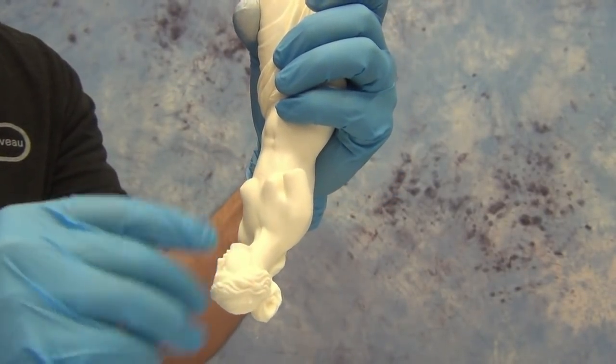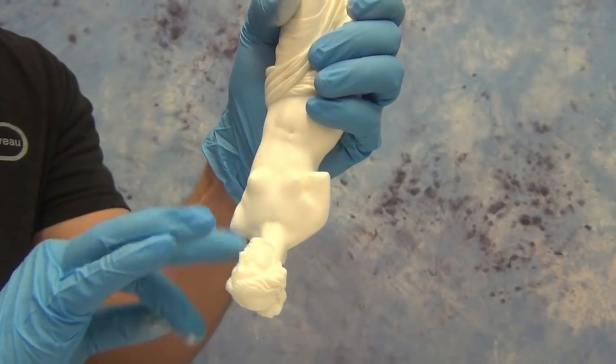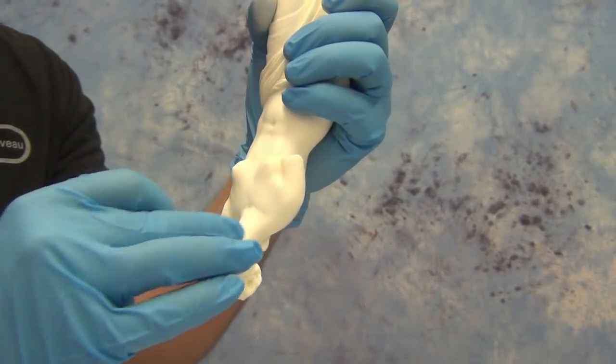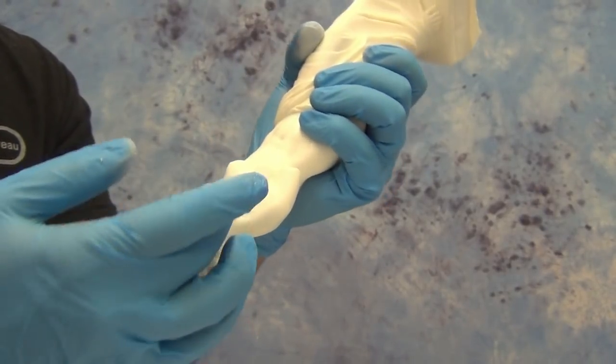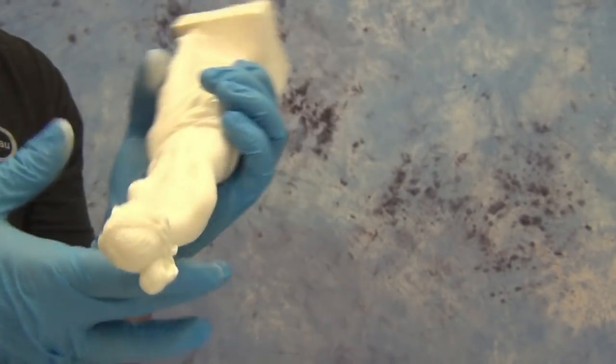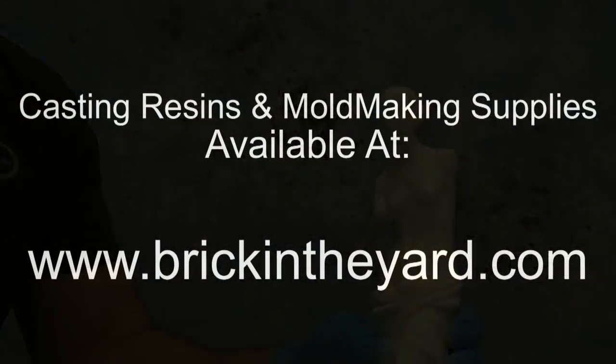You can sand it, you can Dremel on it, and of course you can paint it provided you haven't used any kind of oils on the surface. And there you have the basic process of filling in air bubbles and voids.